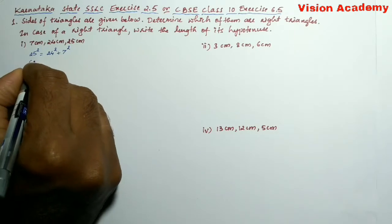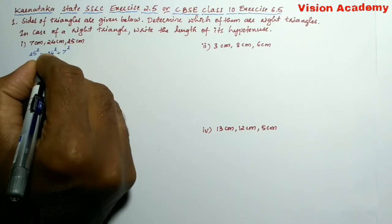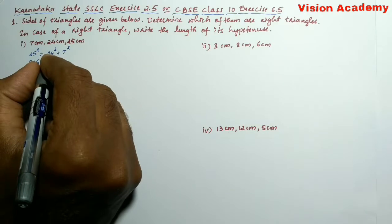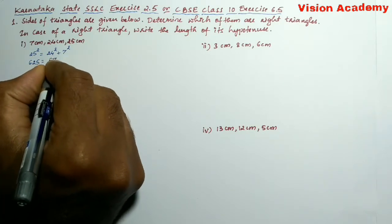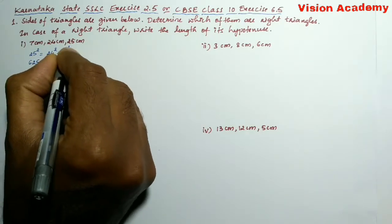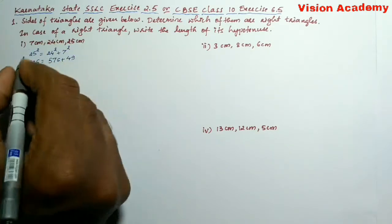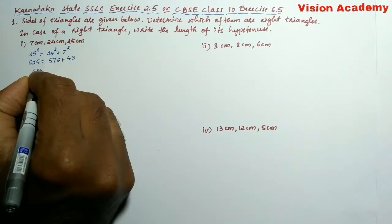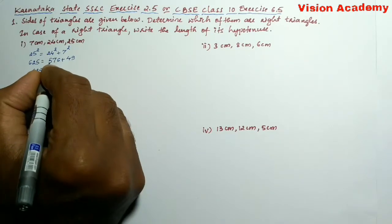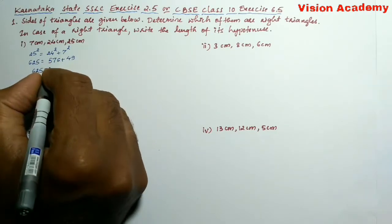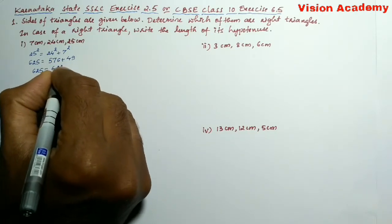25² gives us 625. 24² is 24 × 24 = 576, plus 7 × 7 = 49. Here 625 = 576 + 49 = 625.